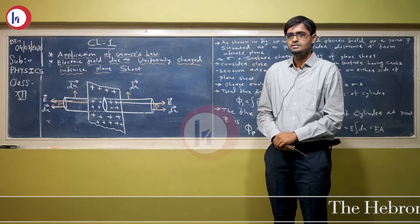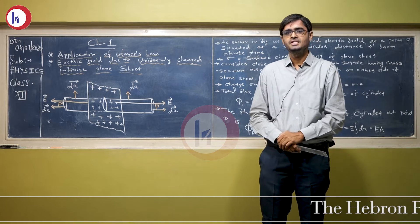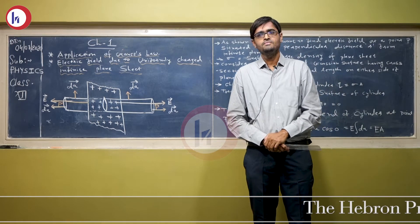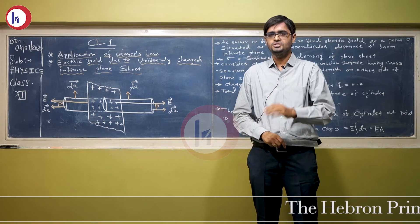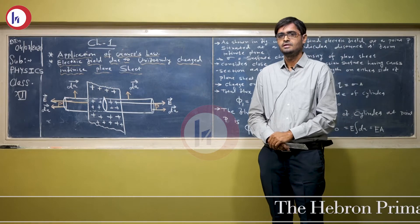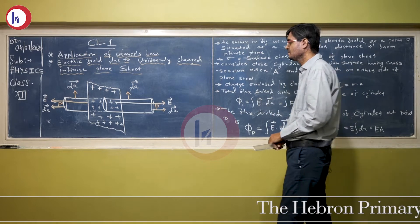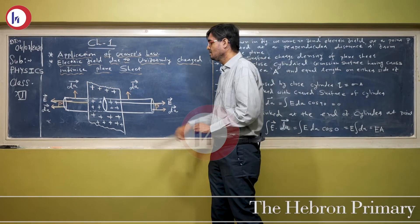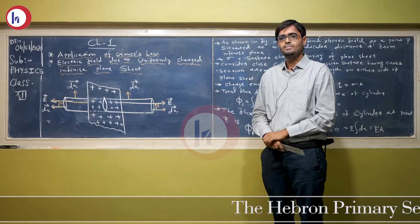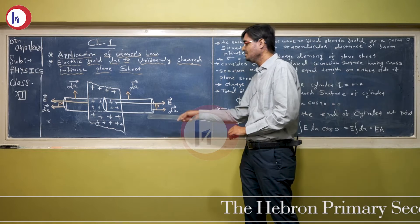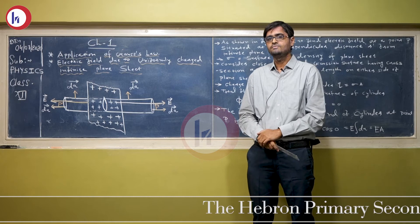Here, understand there is a plane sheet, and that plane sheet has a uniform charge density known as sigma. Sigma is the charge per unit area and that is constant. This is a small portion of the plane sheet which is uniformly charged, and this uniformly charged plane sheet is producing an electric field that we want to find out.